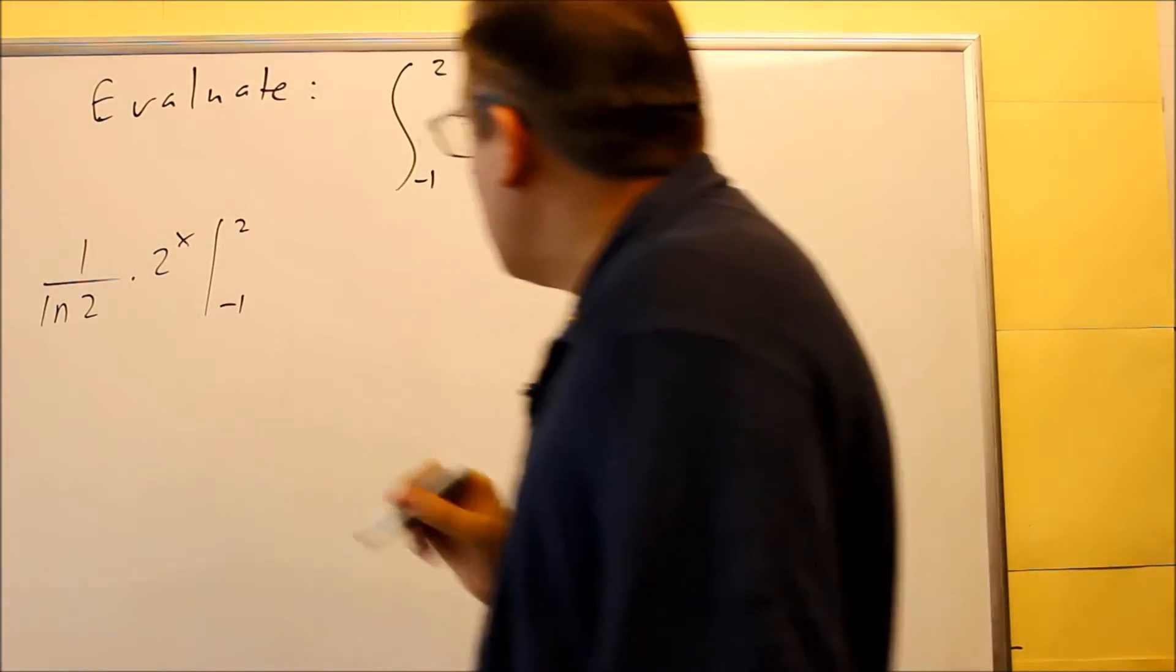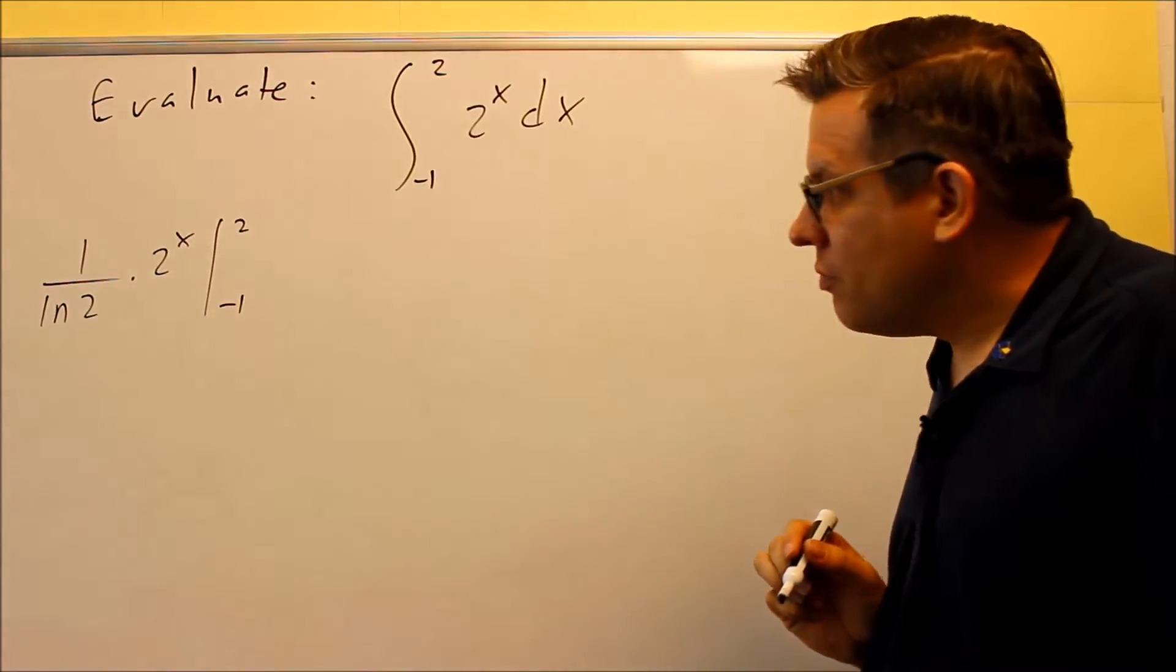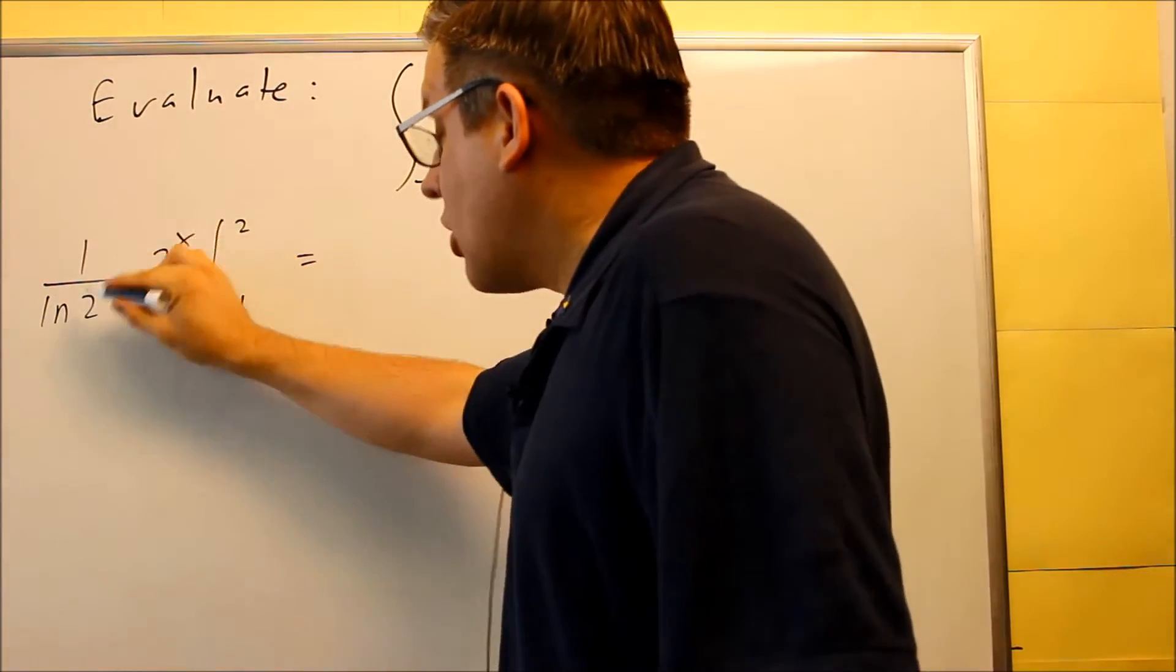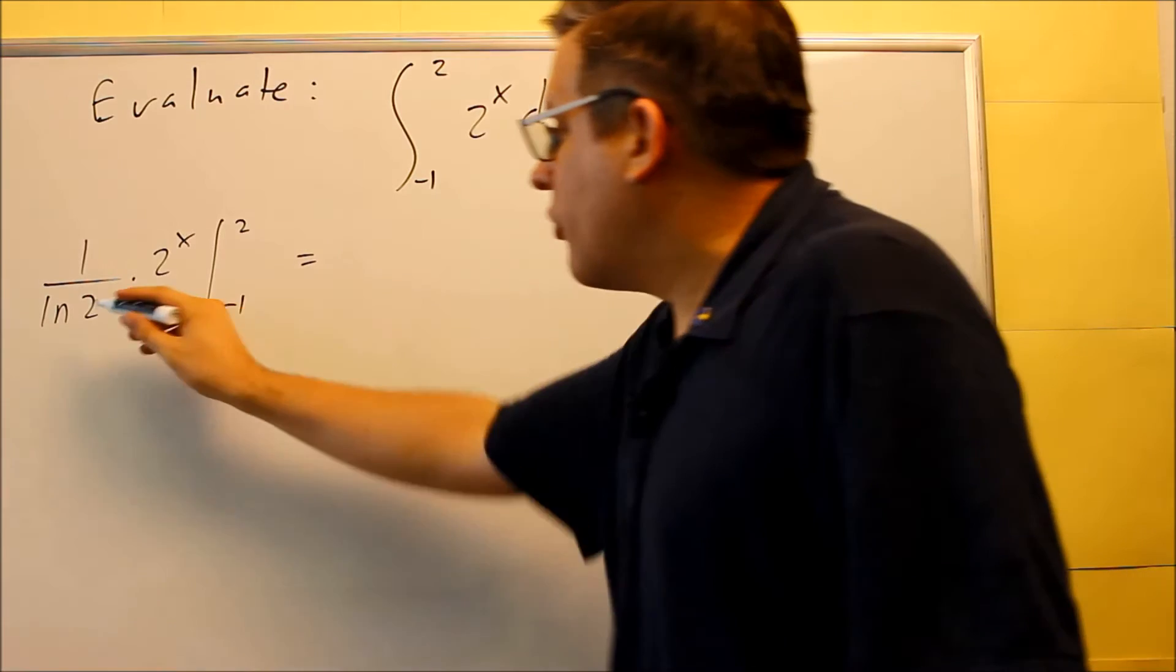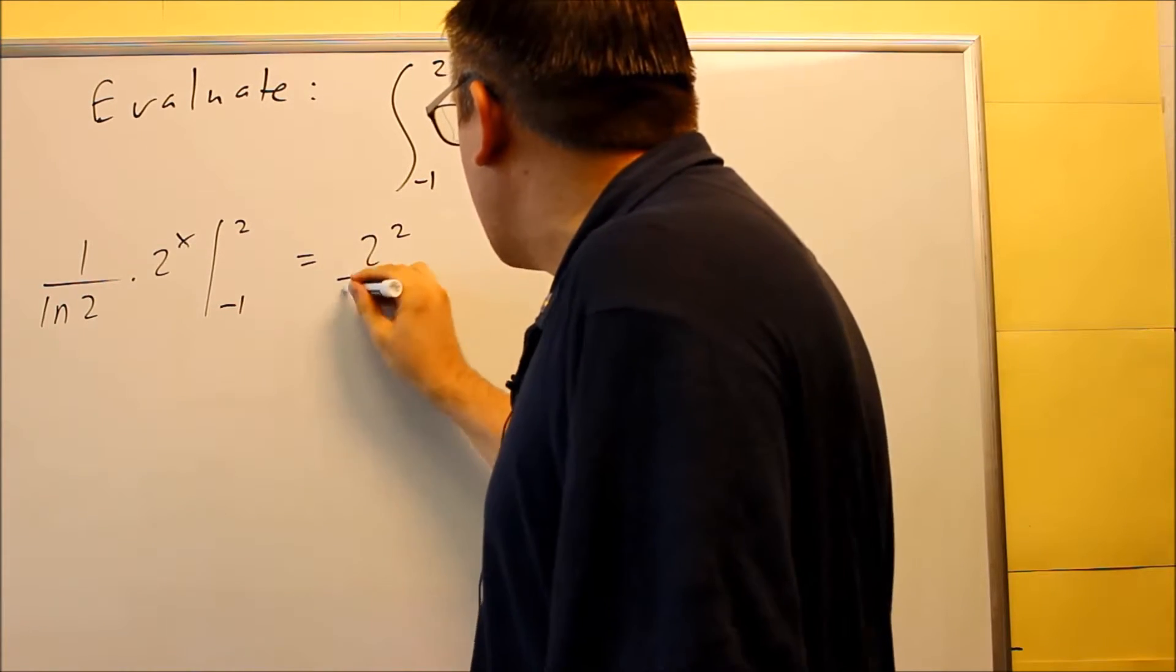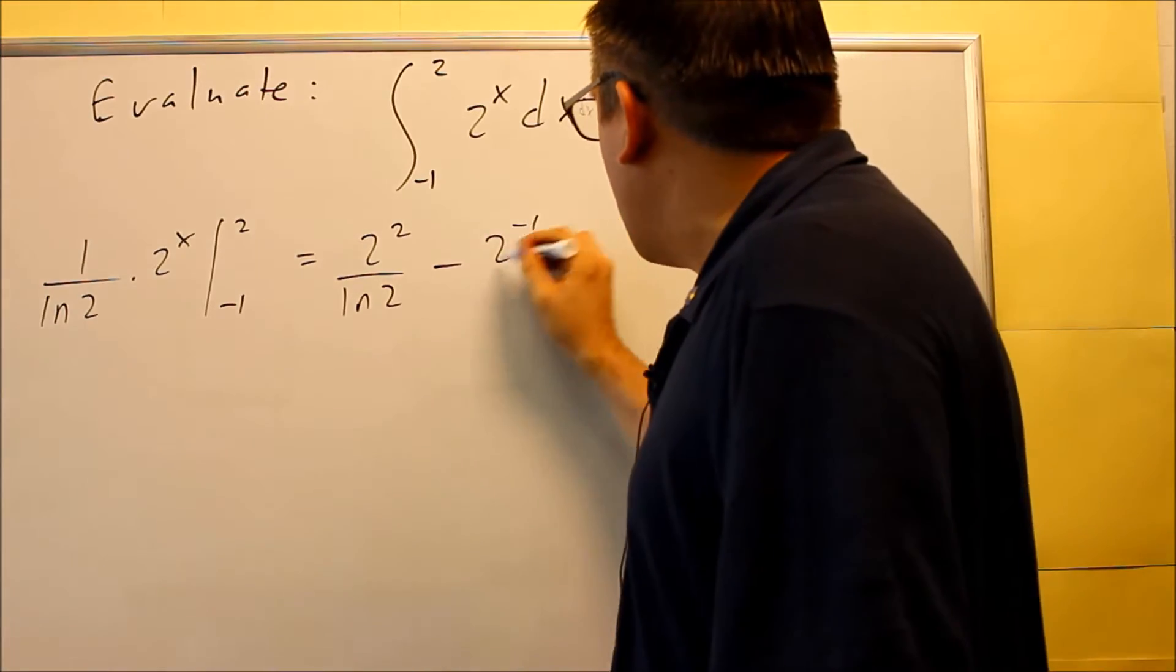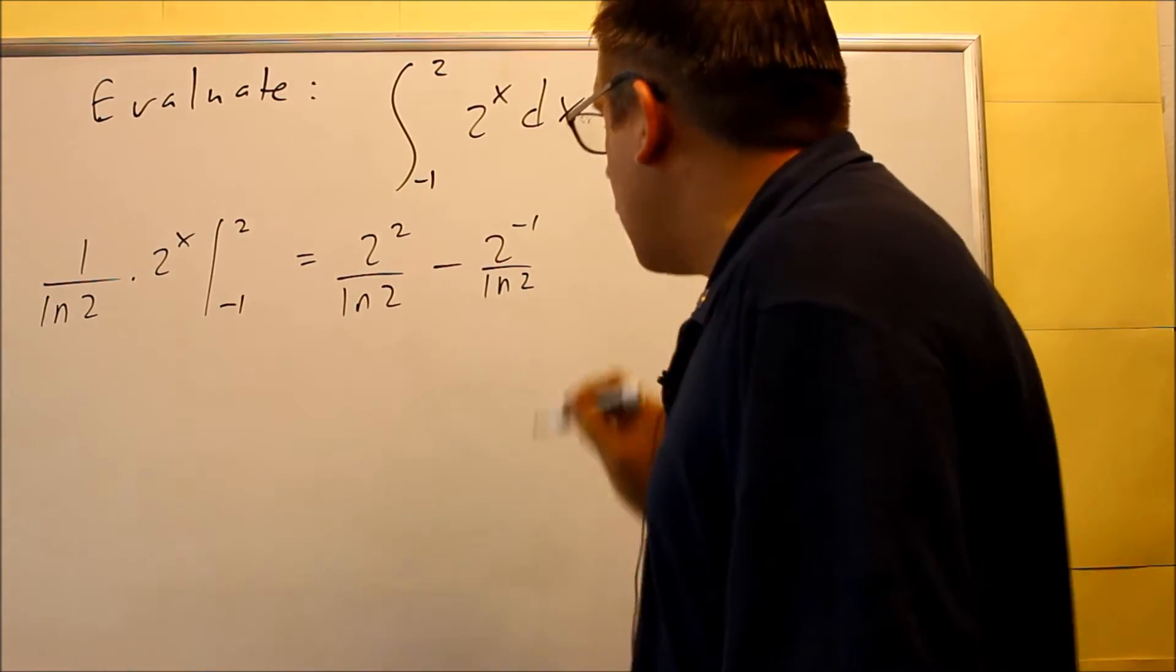And then we're putting in our numbers from negative 1 to 2. So I have, I can write this all, make it one fraction, 2 to the x over ln 2. So I'm going to do 2 squared over natural log of 2. Then I have minus 2 negative 1 over natural log of 2.